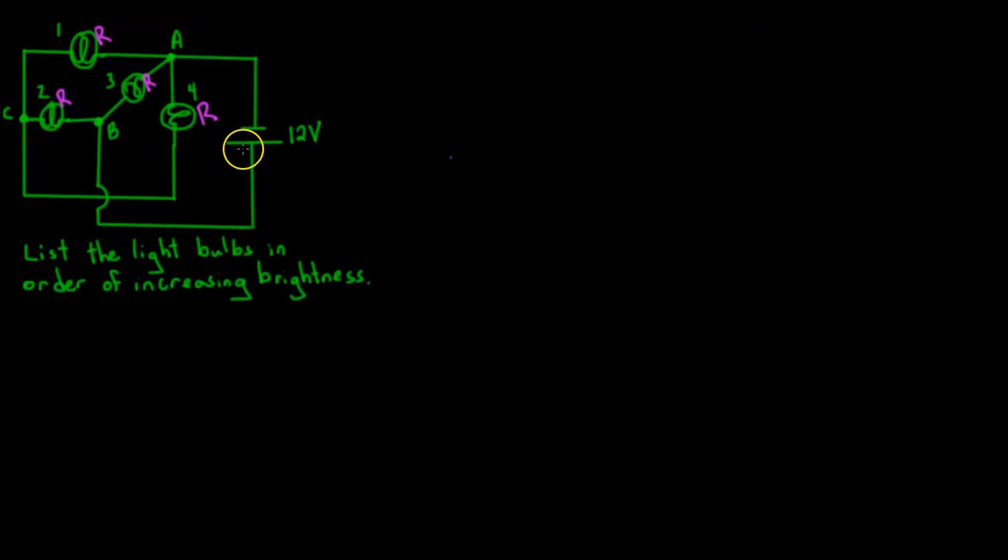Now let's follow the current. We'll do conventional current starting from the positive terminal. Right here we have a choice, so our path moves either left or right. We can go this way to the left, or we can go this way to the right.